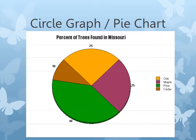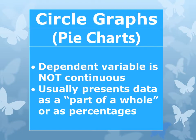The first is called a circle graph or a pie chart. You've seen these before — they look like a circle. They're used to display different percents. The dependent variable is not continuous, so it's not 1, 2, 3, 4 or 2, 4, 6, 8. It usually presents data as part of a whole or as percentages.